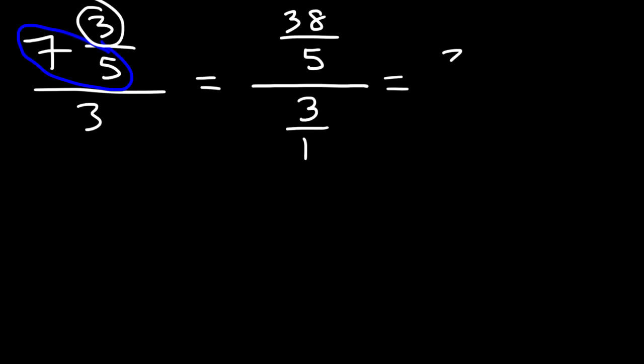So we can rewrite this as 38 over 5 divided by 3 over 1. And just like before, let's use keep, change, flip. Let's keep the first fraction the same, change division to multiplication, and then flip the second fraction.